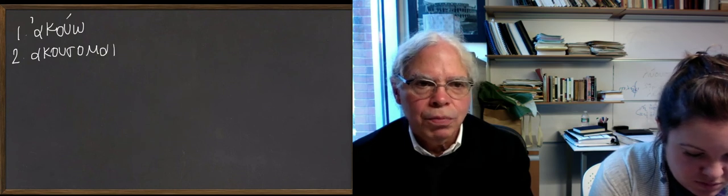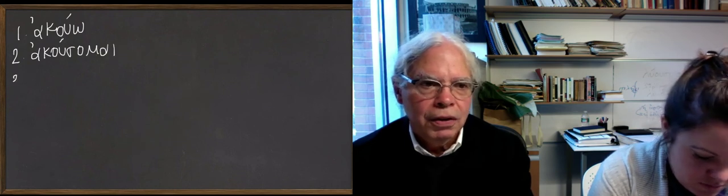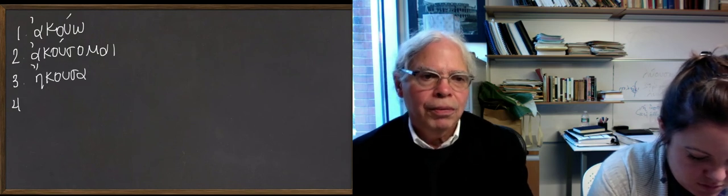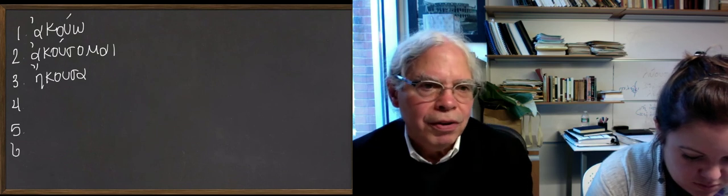The second one is ἀκούσομαι. All of a sudden, it's middle in the future, and then the aorist is ἤκουσα, and so forth.